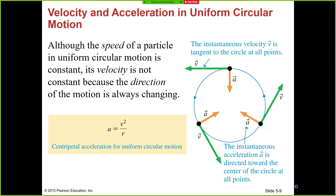Let's get started. We were talking about circular motion, and this circular motion we are talking about is uniform motion. Uniform motion means when the object is moving in a circle, it maintains constant velocity — so the velocity is not changing.